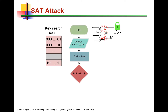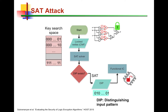A DIP is an input combination that produces different outputs for two different key values. If we can identify a DIP, then one of those key values is definitely a wrong key and can be pruned away. The SAT solver produces a DIP if it exists, and this DIP is applied to the oracle — the functional chip — so that we get the outputs of the correct working chip. That output tells us which key values produce wrong outputs, and the oracle's response is used to prune away all wrong keys that lead to wrong outputs.